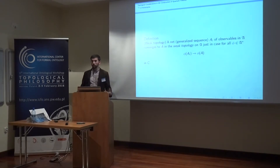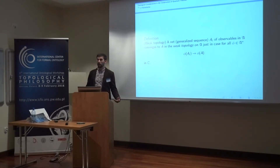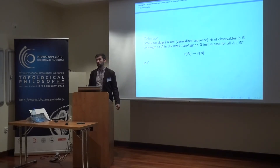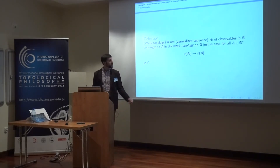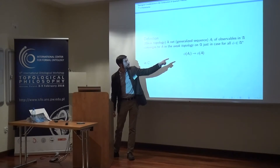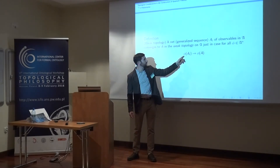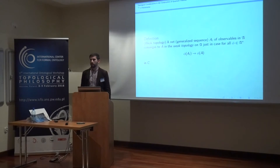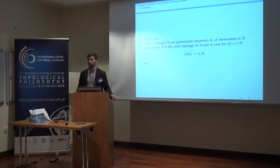Now, one can use this dual space — your collection of states — to define a topology on your physical quantities. This captures a notion of approximation or similarity between our physical quantities. A net, which is just a generalized sequence of quantities in our algebra, converges: we say Aᵢ converges to A in the weak topology just in case for all elements phi of the dual space, the value phi(Aᵢ) converges to phi(A) in the usual topology on the complex numbers. This condition for convergence suffices to define the weak topology.